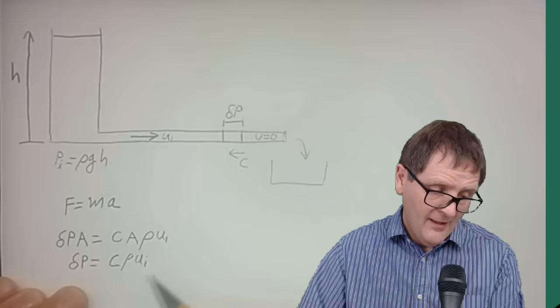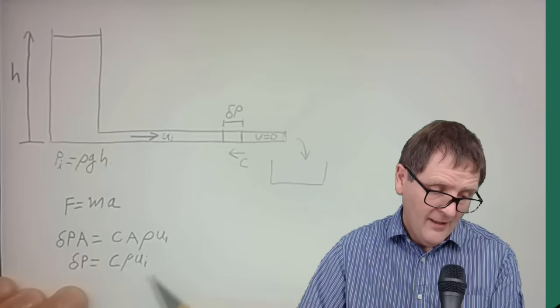More generally, the pressure rise for a sudden closure of a valve is C times rho times U. That equation is called the Joukowsky equation and it's a famous equation. It determines the maximum pressure rise you can get due to water hammer — the product of sonic velocity, the density of the fluid, and the change in fluid speed.